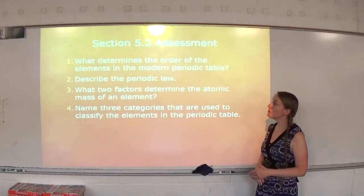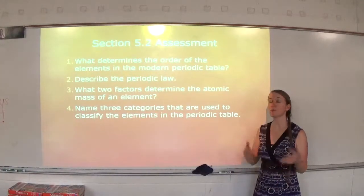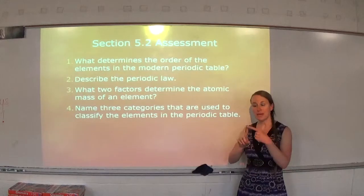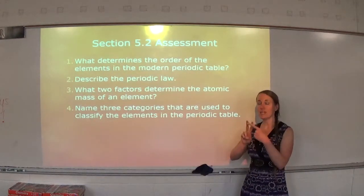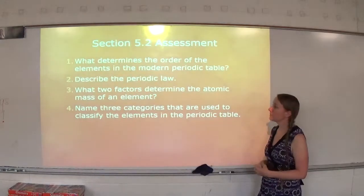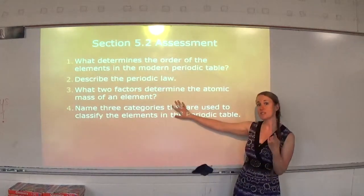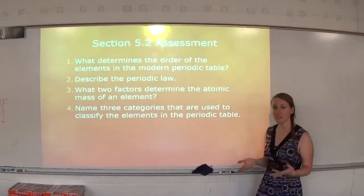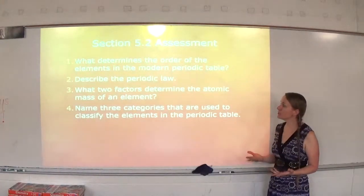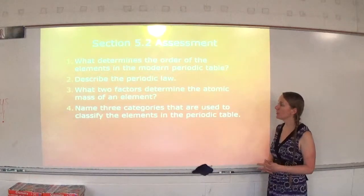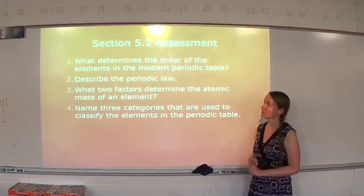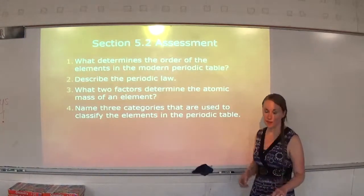Number three: what two factors determine atomic mass? Atomic mass is based on isotopes — specifically the mass of the isotopes and the natural abundance or percentage of the isotope. It's based on the mass of the isotope and the percentage or natural abundance at which that isotope occurs. Number four: name three categories used to classify elements in the periodic table. We have metals, metalloids, and nonmetals.